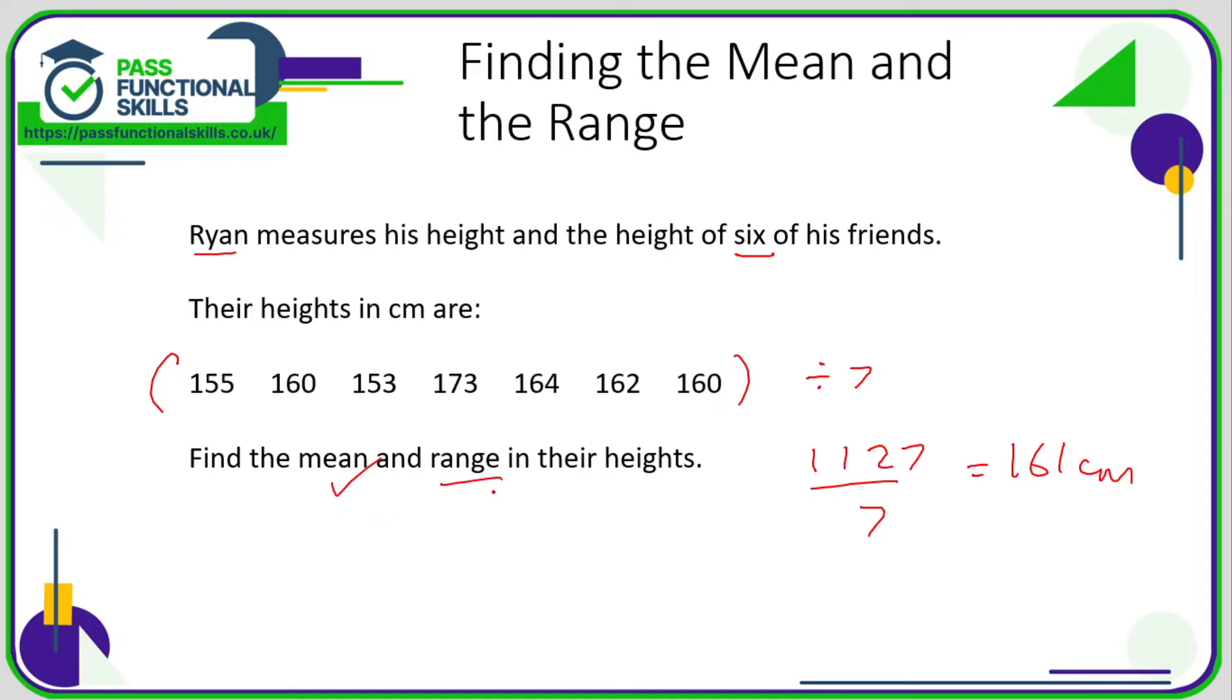So we're going to locate the smallest value. Is there anything smaller than 153? No, there is not. And what's the biggest? 173, okay. 173 is the biggest, and so the range is the difference between the biggest and the smallest.